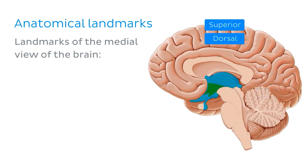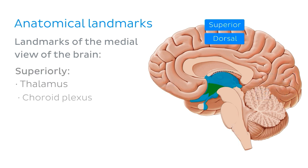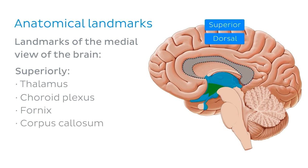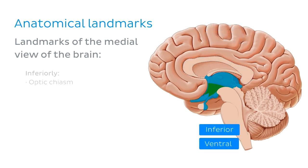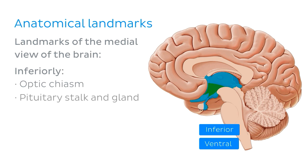Superior to the hypothalamus, we're going to find the thalamus, the choroid plexus, the fornix, and the corpus callosum. Inferior to the hypothalamus, we're going to find the optic chiasm, the pituitary stalk and gland, and the mammillary body.